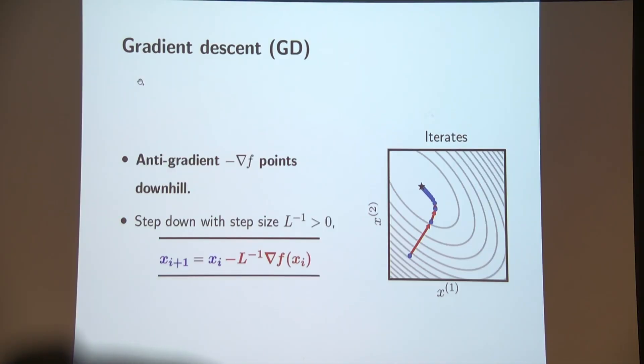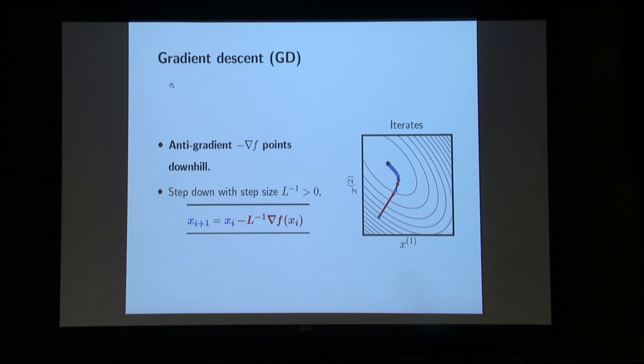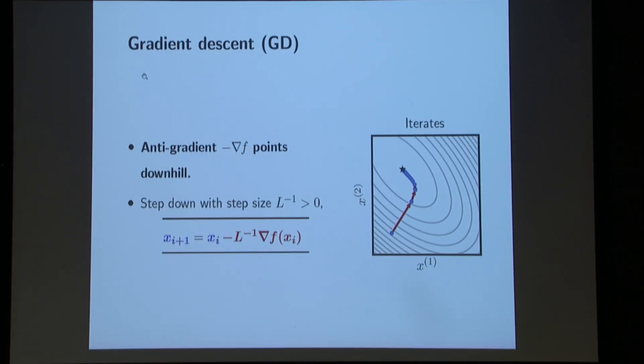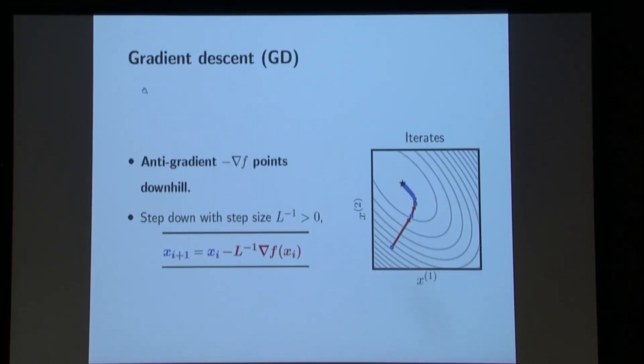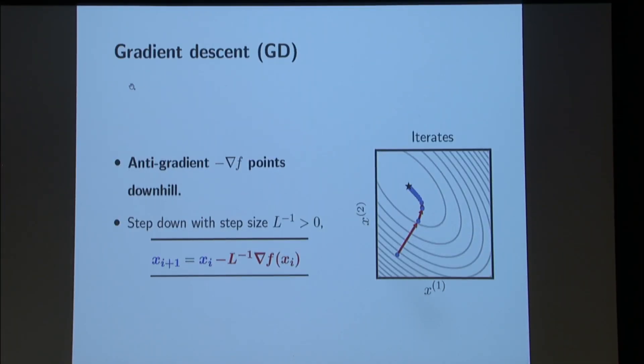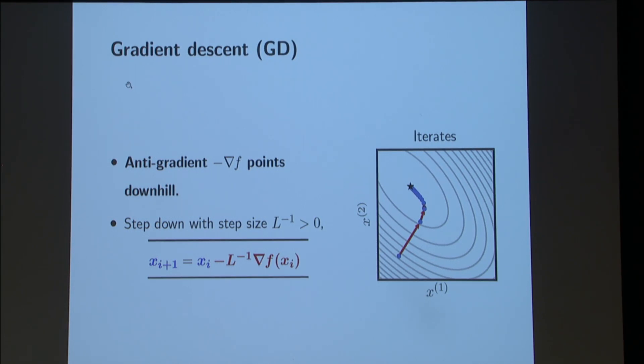The first algorithm that you might learn in a convex optimization course, or one of the first ones, is the so-called gradient descent algorithm. And it's based on the insight that the anti-gradient points instantaneously downhill of our function. And so the algorithm is quite simple. Starting at any point x0 in space, we're going to sort of step down the level sets of the function by following the anti-gradient for some fixed step size, L inverse. And so here I'm plotting on our plot the iterates of some gradient descent algorithm in blue, with the red arrows representing the direction of the position update that follows the anti-gradient.